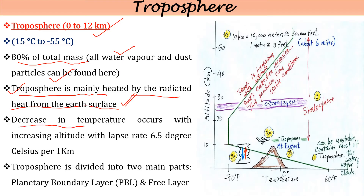Temperature decreases with increase in altitude at a lapse rate of 6.5 degrees Celsius per kilometer. This is called the environmental lapse rate, and it is found throughout the troposphere. The troposphere is mainly divided into two parts: the planetary boundary layer and the free atmosphere.